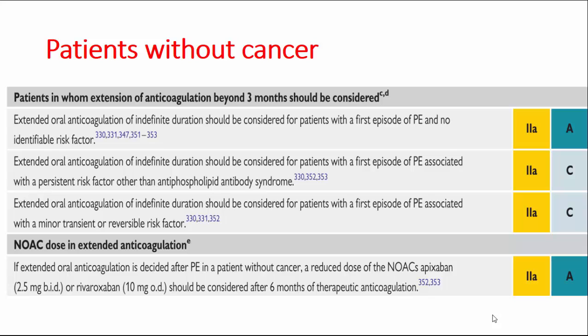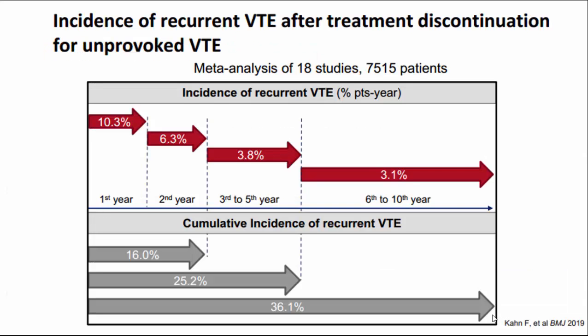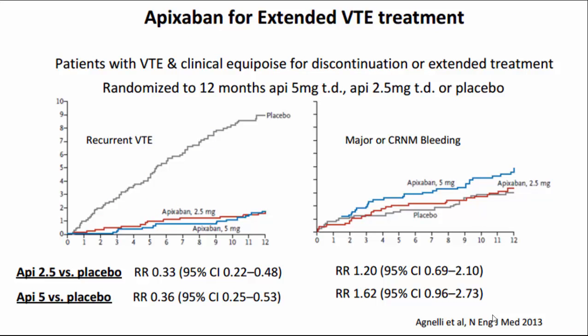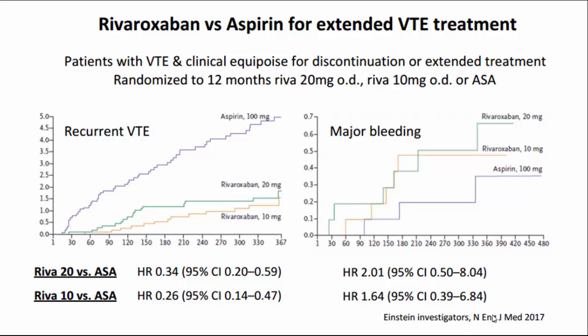When extending anticoagulation with NOACs, the dose should be reduced: rivaroxaban to 10 mg once daily or apixaban to 2.5 mg twice daily. The rationale for extended anticoagulation is clear — the risk of VTE recurrence increases over time. At five years after the first attack without extended anticoagulation, recurrence incidence is 36%. Extension with apixaban or rivaroxaban showed very low recurrence rates and a very safe profile.